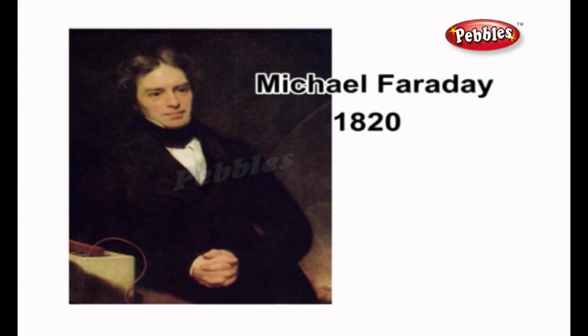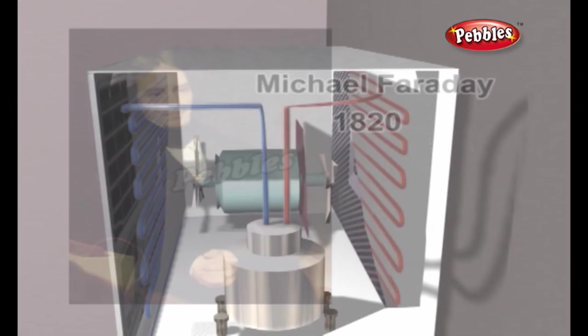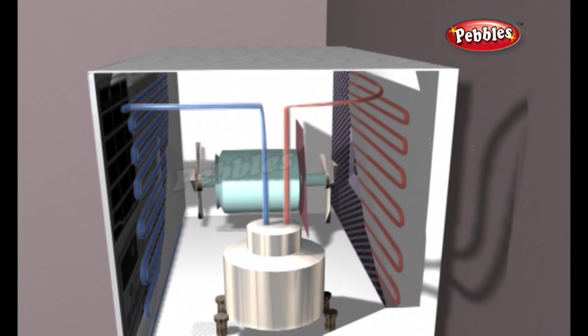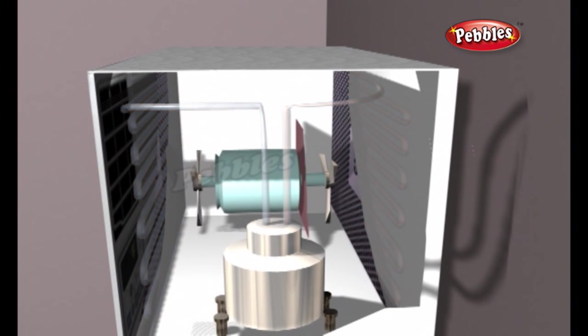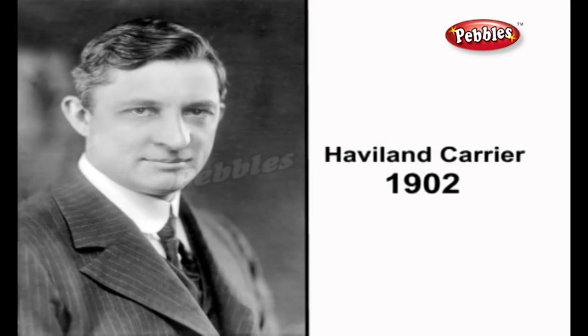In 1820, British scientist and inventor Michael Faraday discovered that compressing and liquefying ammonia could chill air when the liquefied ammonia was allowed to evaporate. In 1902, the first modern electrical air conditioning was invented by Willis Havilland Carrier in Syracuse, New York.